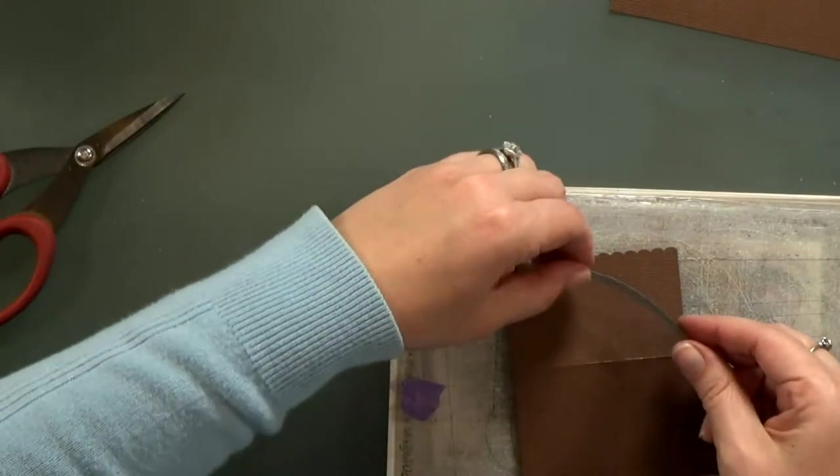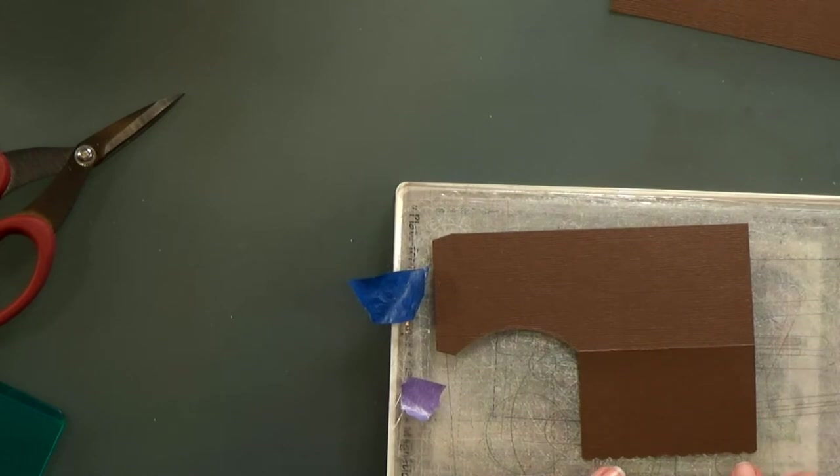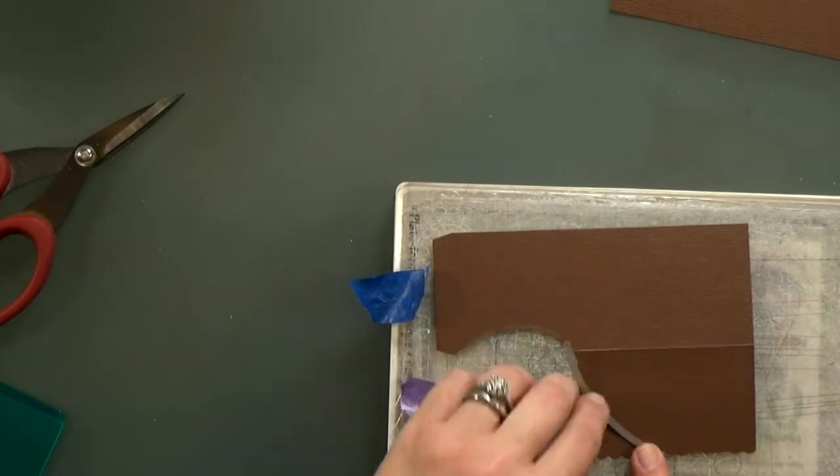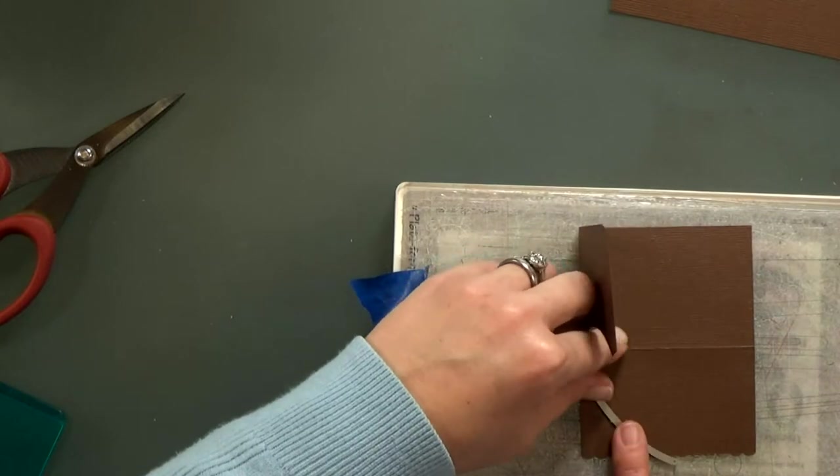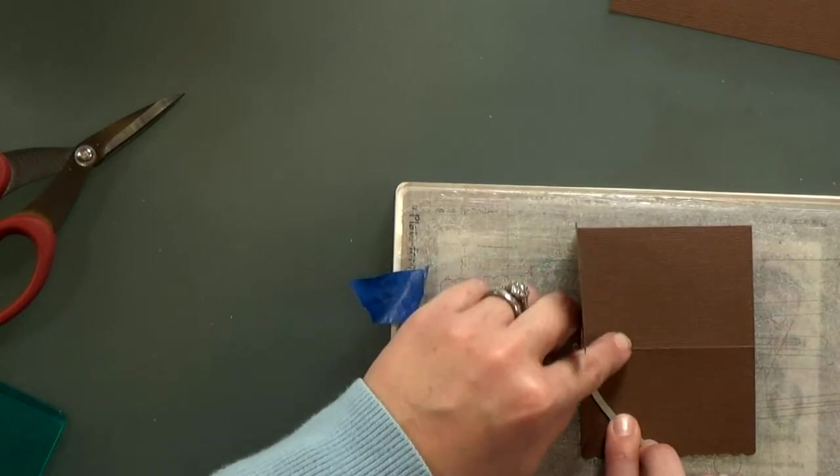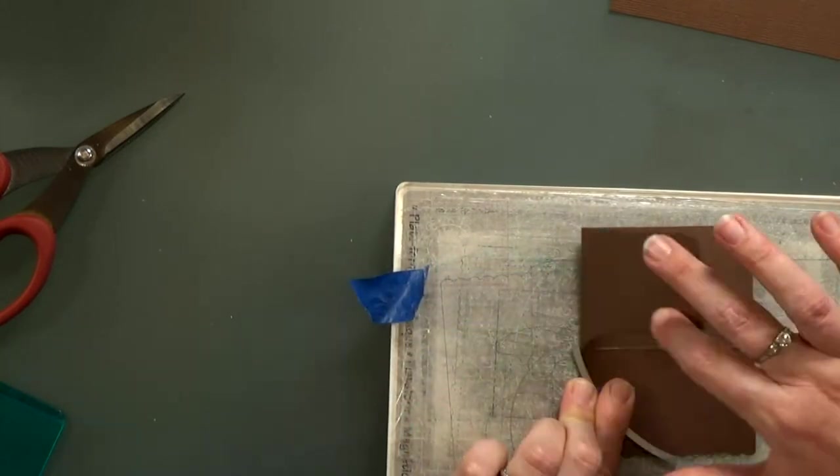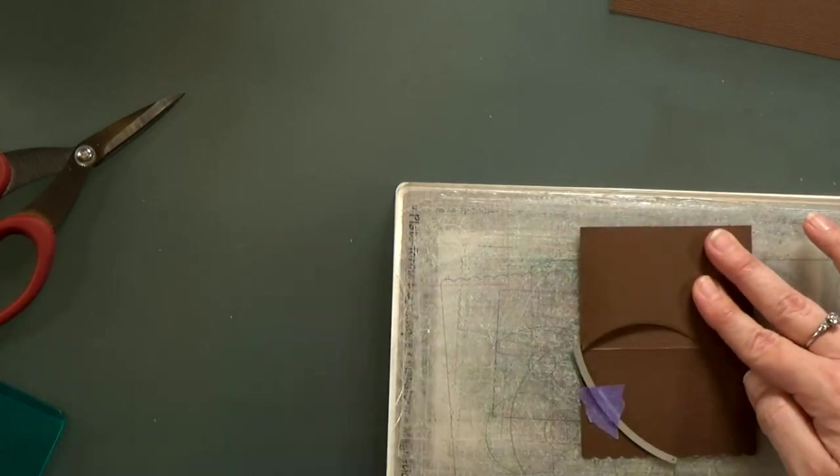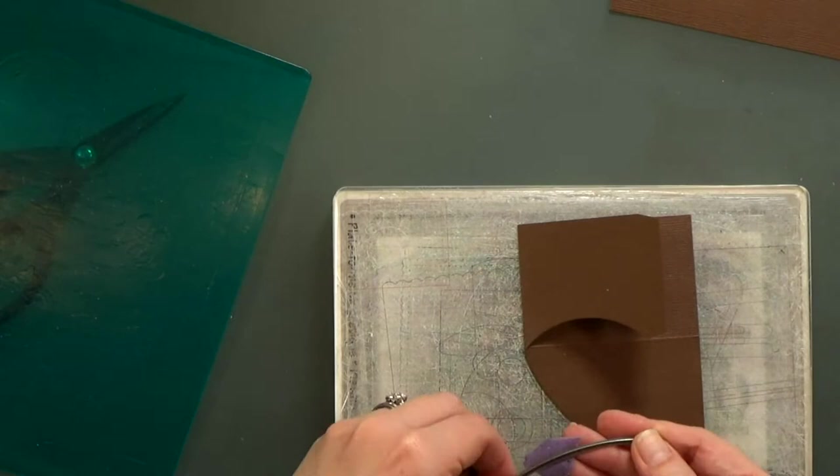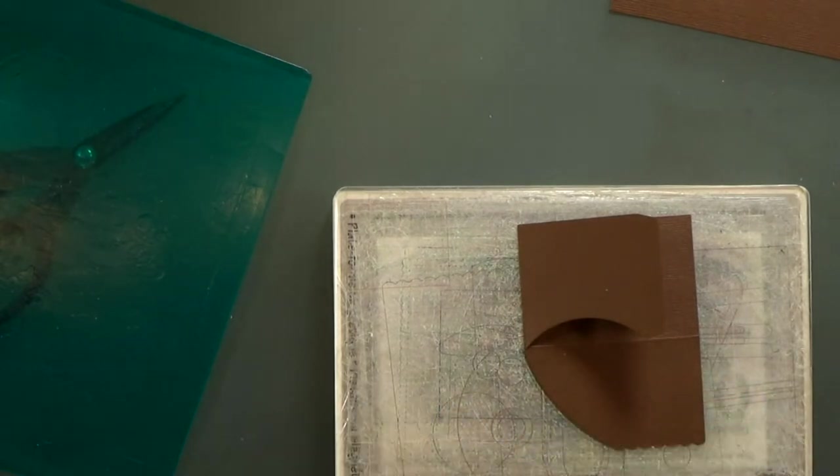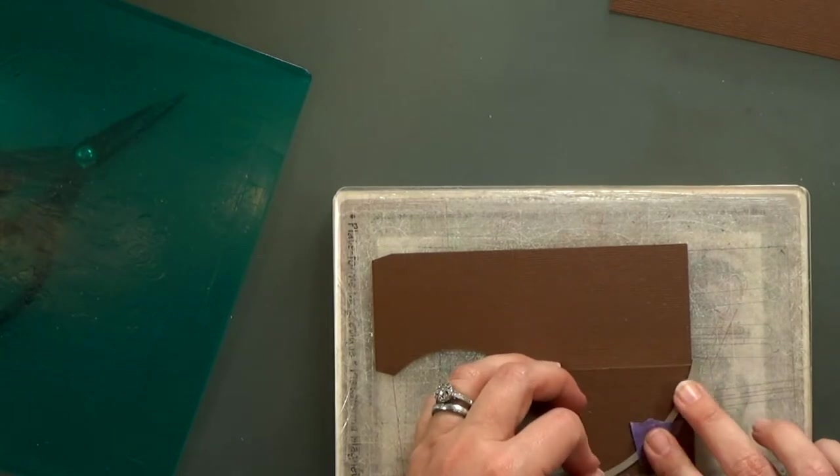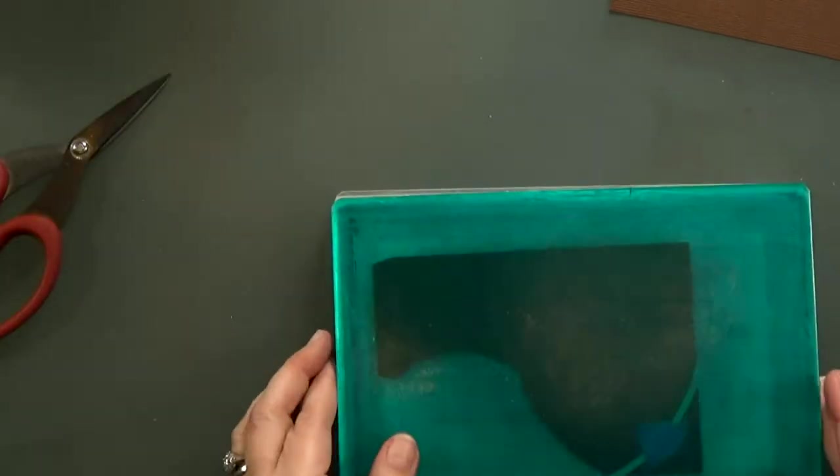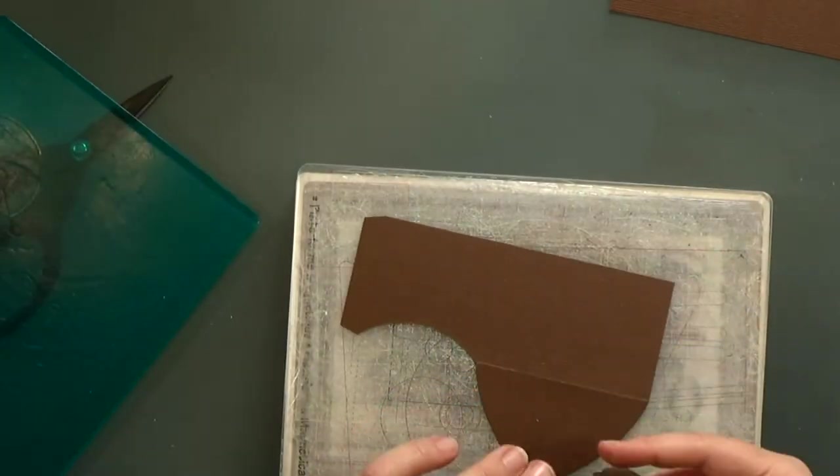Now for the bow, I'm going to use this curved die. This is the die in that scallop set that's supposed to be the banner string, but it has a nice curve. So I'm going to cut half of the front of the bow and then I'll reposition it and cut the other half. You could substitute a heart die here if you wanted and just cut the bottom portion of it.